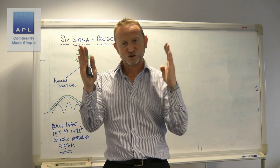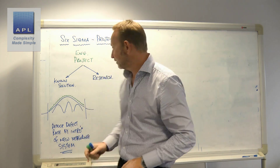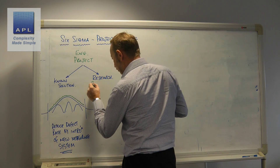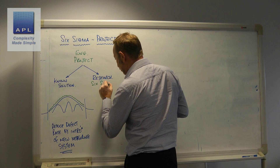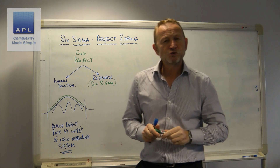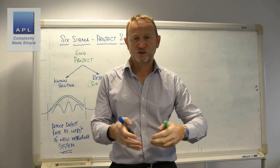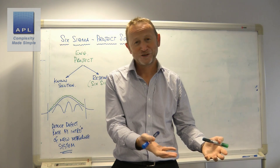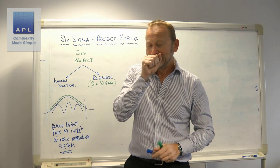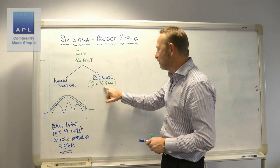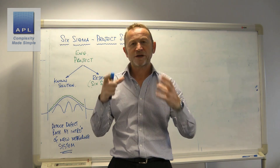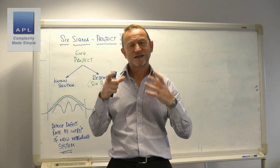Six Sigma, on the other hand, is a research project — because you don't know the answer. If you knew the answer, you would have implemented the solution and you wouldn't have a problem. Scoping a research project is going to be more difficult; it has to be more flexible.